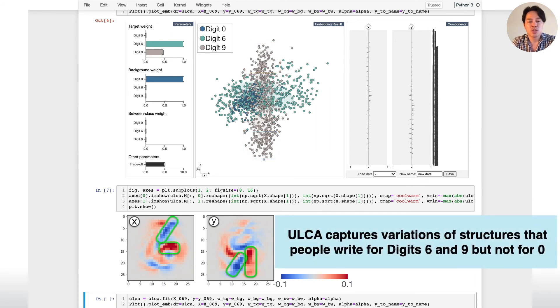From these heat maps, we can see ULCA captures variations of structures that people write for digit 6 and 9 but not for 0.